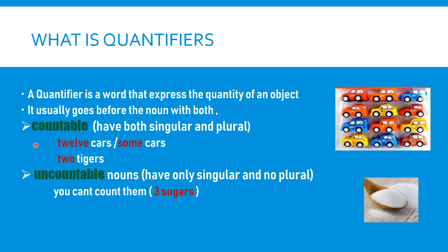First, in order to find out the quantifiers, it is important for us to have a great deep knowledge on countable and uncountable nouns. What is a countable noun? Countable noun means a noun which can be counted. For example, flowers, pencil, pen — all these counting objects are called countable nouns.